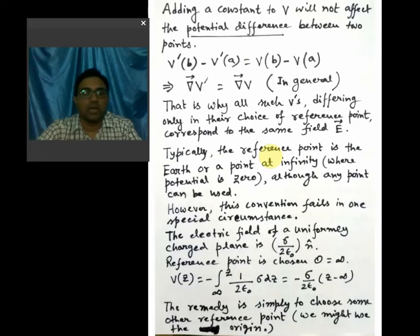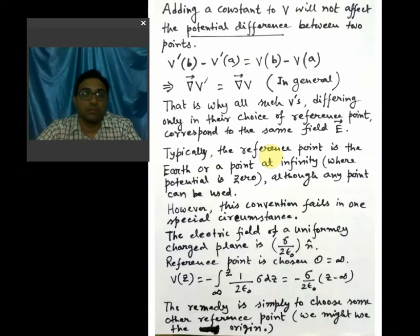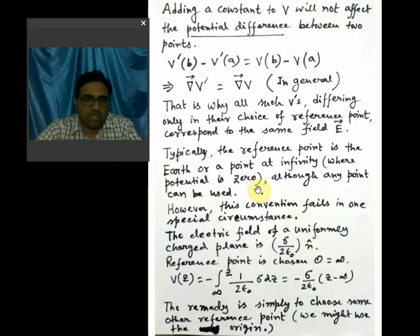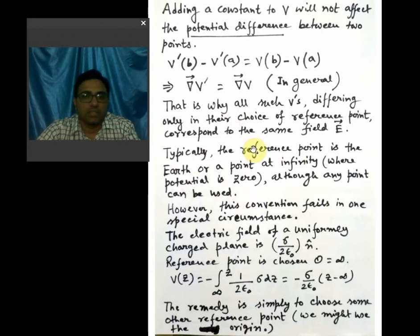Typically the reference point is chosen as the Earth or a point at infinity where the potential is zero. You can consider any point for calculating the potential difference or potential. However, this convention — taking the reference at Earth or infinity — fails in one special circumstance. Let us see that.